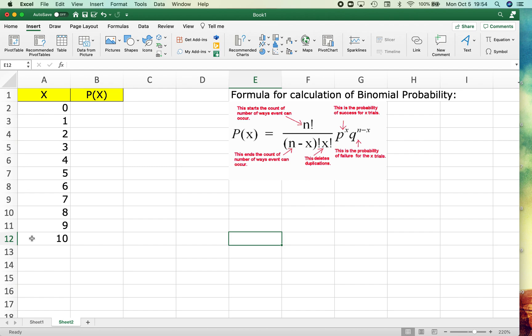So whenever we're approaching a binomial problem and we're asked to find the probability of x successes, let's look at this first one. Whenever we want to find the probability of x successes, we want to create a table like this.